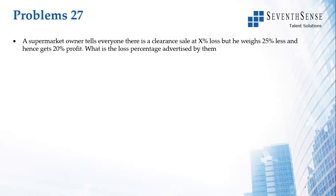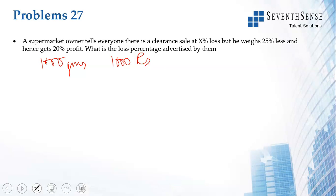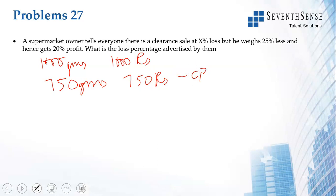Next problem: a shopkeeper tells everyone there is a clearance sale at x percent loss, but he weighs 25 percent less and hence gets 20 percent profit. We need to find x. Since he weighs 25 percent less, he gives only 750 grams. 750 grams costs him 750 rupees — that is his cost price. He is getting a 20 percent profit on this.